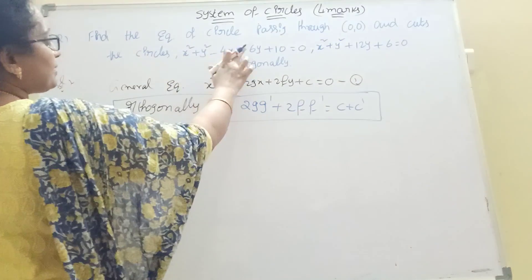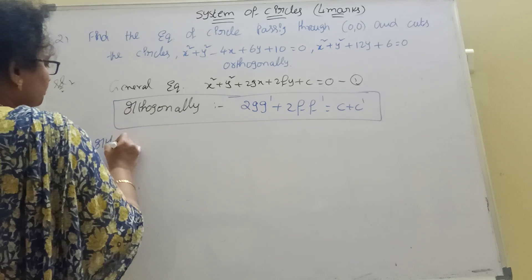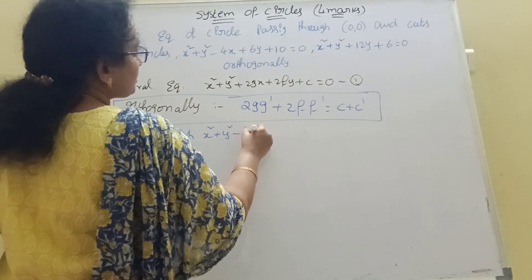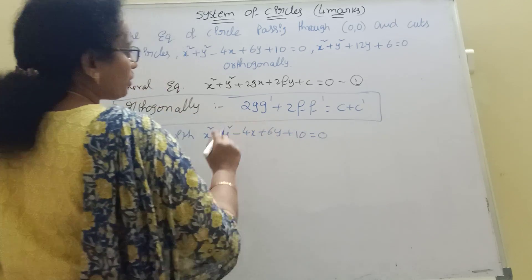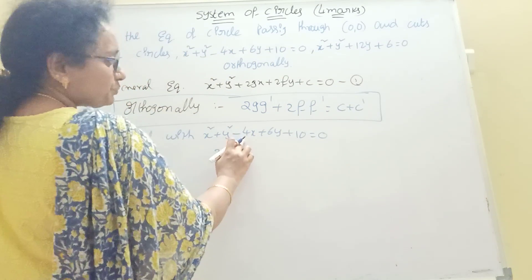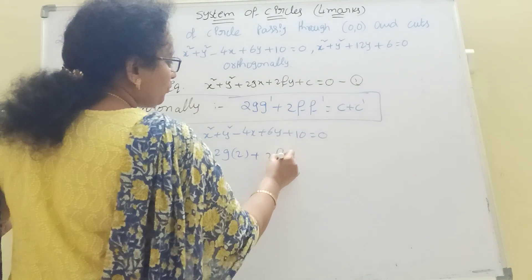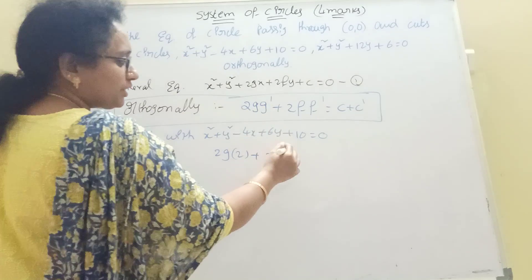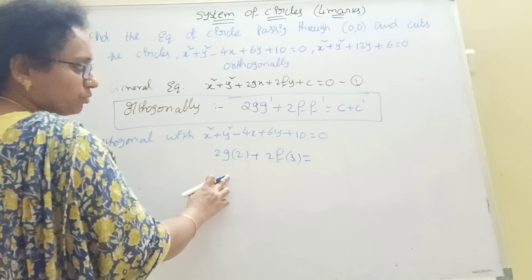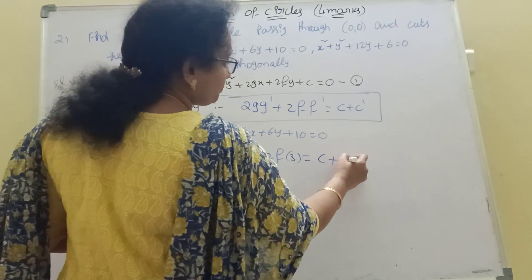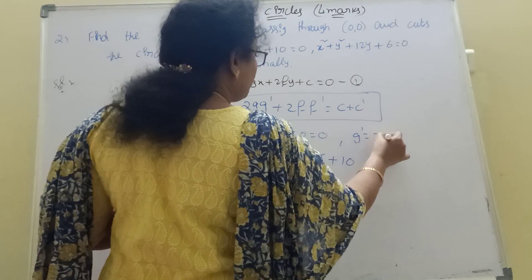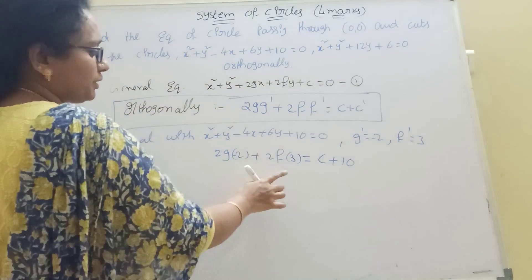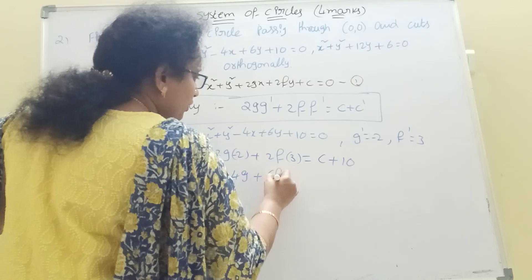Each circle uses this formula. Our circle is orthogonal with the circle x² + y² minus 4x + 6y + 10 = 0. Applying the formula: 2g·g' + 2f·f' = c + c'. Here g' = minus 2, f' = 3, c' = 10. So: 2g·(minus 2) + 2f·3 = c + 10, giving minus 4g + 6f = c + 10.